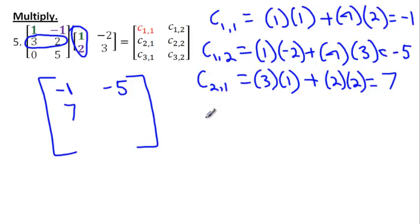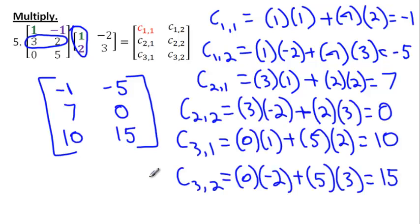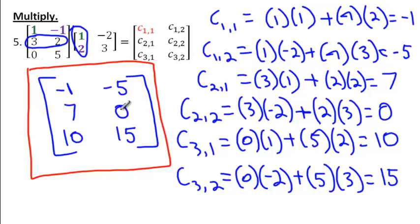I would actually like you to pause this video now and continue figuring out the other three elements. I'm going to pause my recording and figure it out — all the answers are just going to pop up here in just a second, and then you can see if you did it right. The other numbers were zero, then ten, and then fifteen. You can check your answers here. It's again just matching up your rows and your columns with each element, then you add the products.